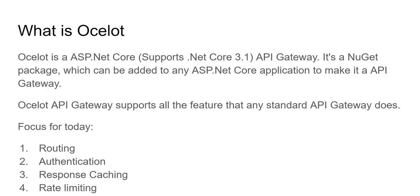Now what is Ocelot? Ocelot is an ASP.NET Core API Gateway. It supports .NET Core 3.1. It's a NuGet package which can be added to any ASP.NET Core application to make it an API Gateway. Ocelot supports all the features of a standard API Gateway. But for today's video I'm going to focus on routing, authentication, response caching, and rate limiting.